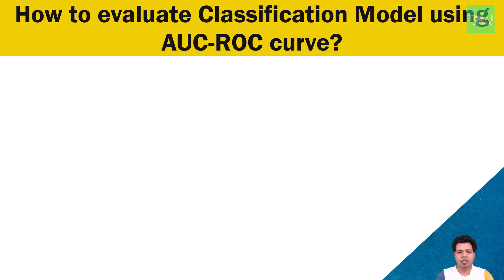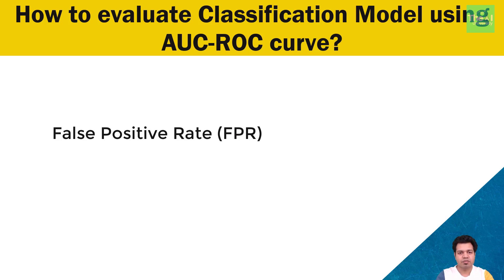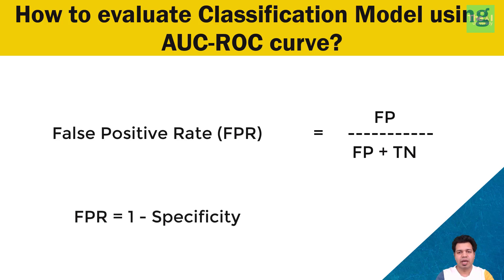Moving on to false positive rate, or FPR, which is calculated as the ratio between the number of negative instances wrongly categorized as positive — that is, false positives — and the total number of actual negative instances. False positive rate equals False Positive divided by False Positive plus True Negative. FPR tells us how wrongly the classification model has classified actual negatives as positive. False positive rate can also be calculated as 1 minus specificity.